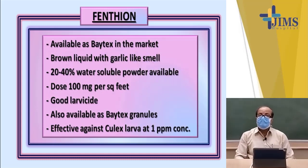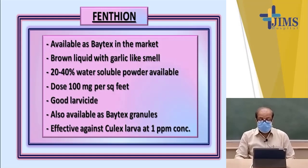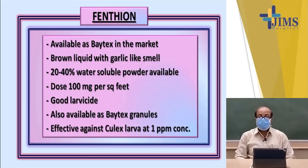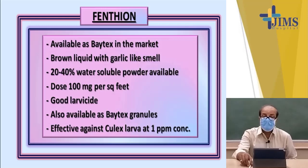A very commonly marketed compound is fenitrothion, available in the market as Baytex. It is a brown liquid with a garlic smell, and a 20 to 40% water-soluble powder is also available. The dose is 100 milligrams per square foot. It is a very good larvicide as well as adulticide — it can kill adults also. It is available as Baytex granules which can be sprinkled over water to kill larvae. It is effective against Culex larvae at 1 ppm concentration.